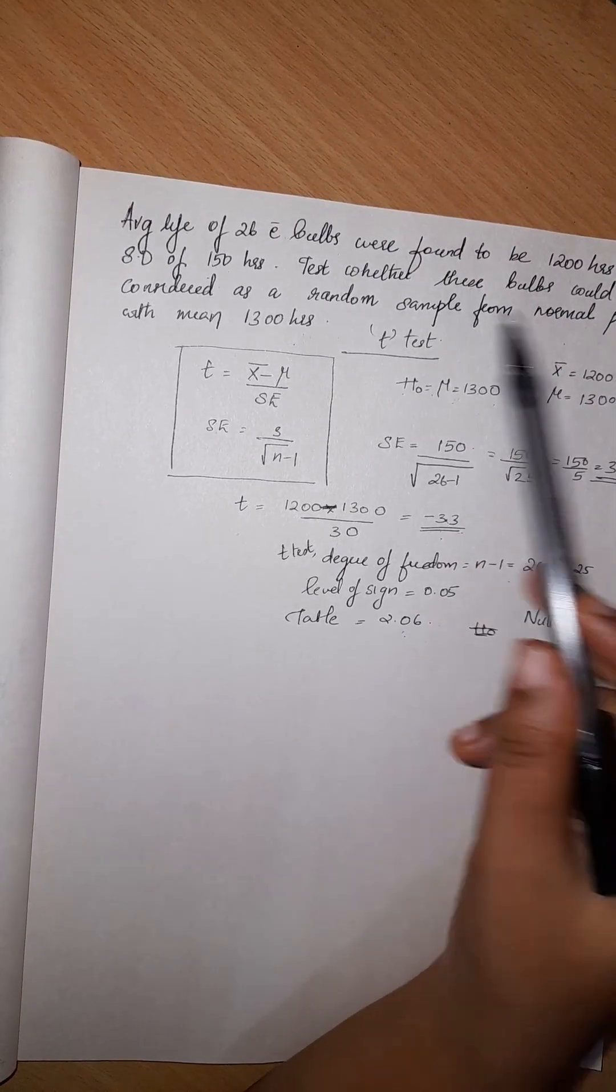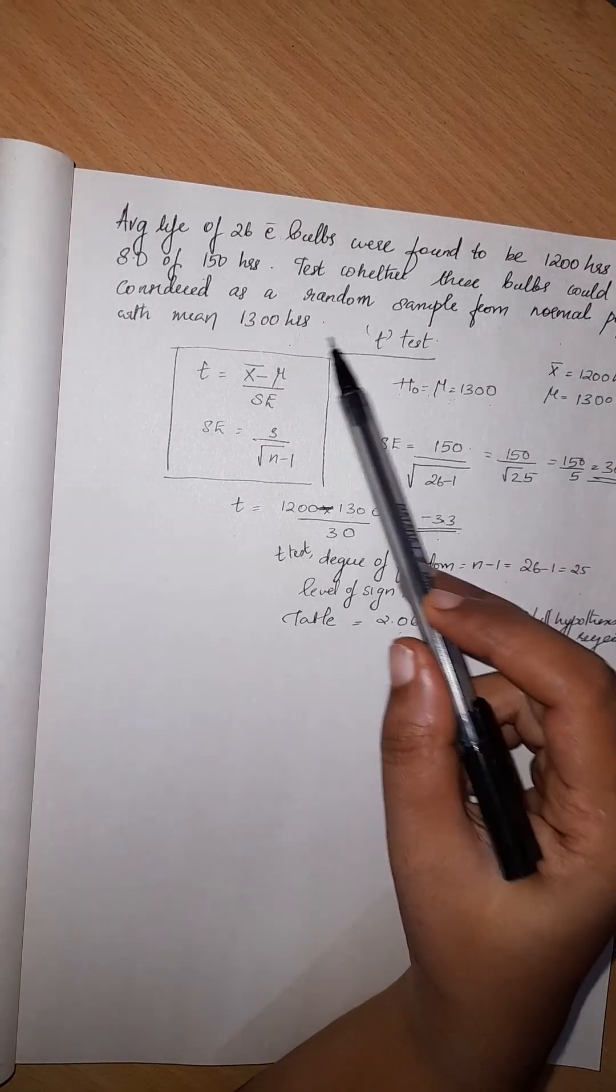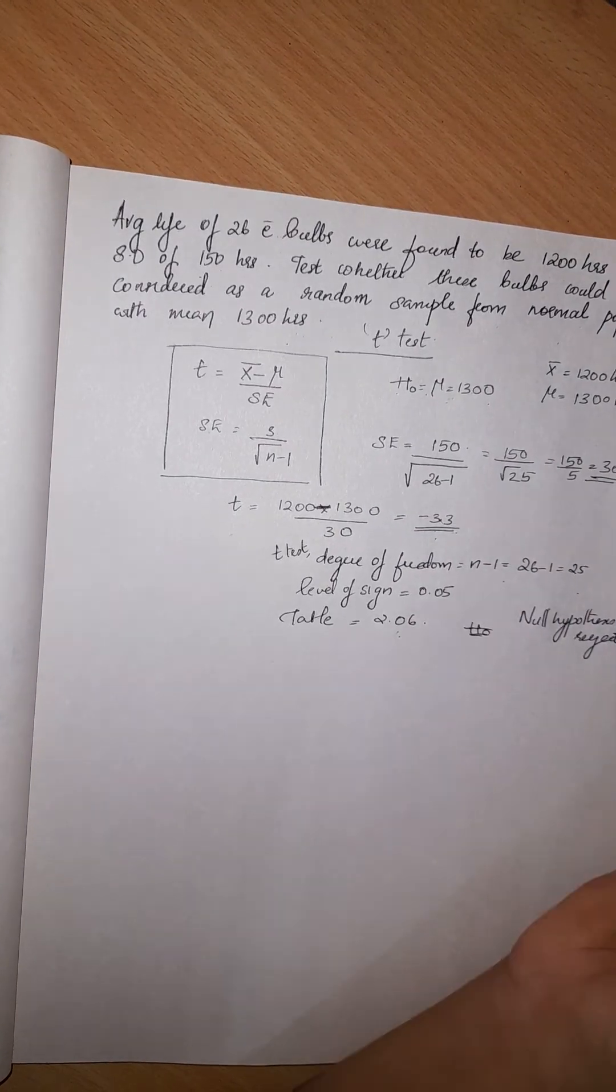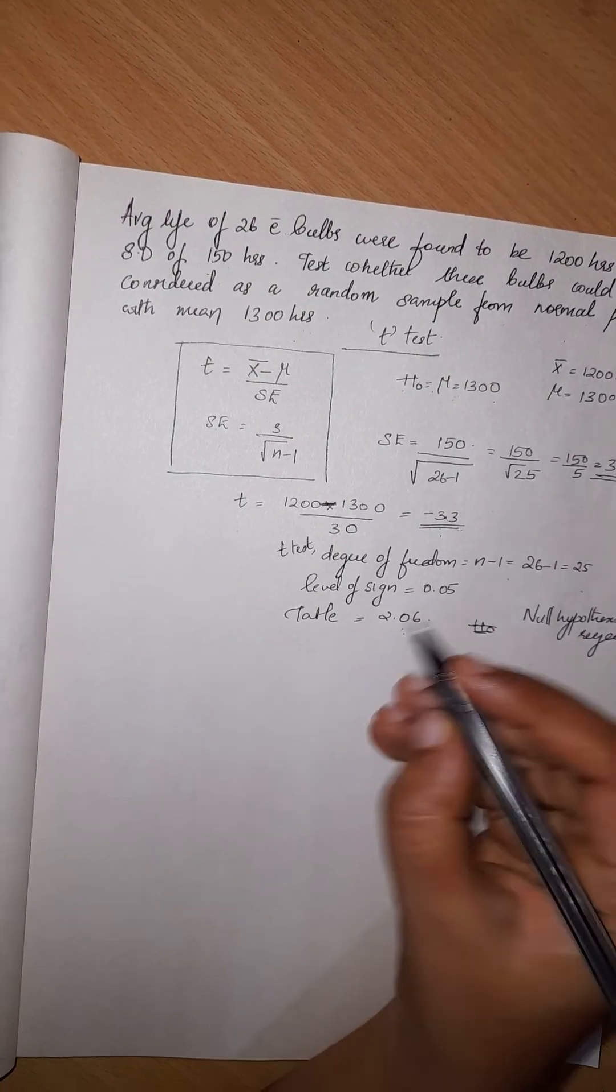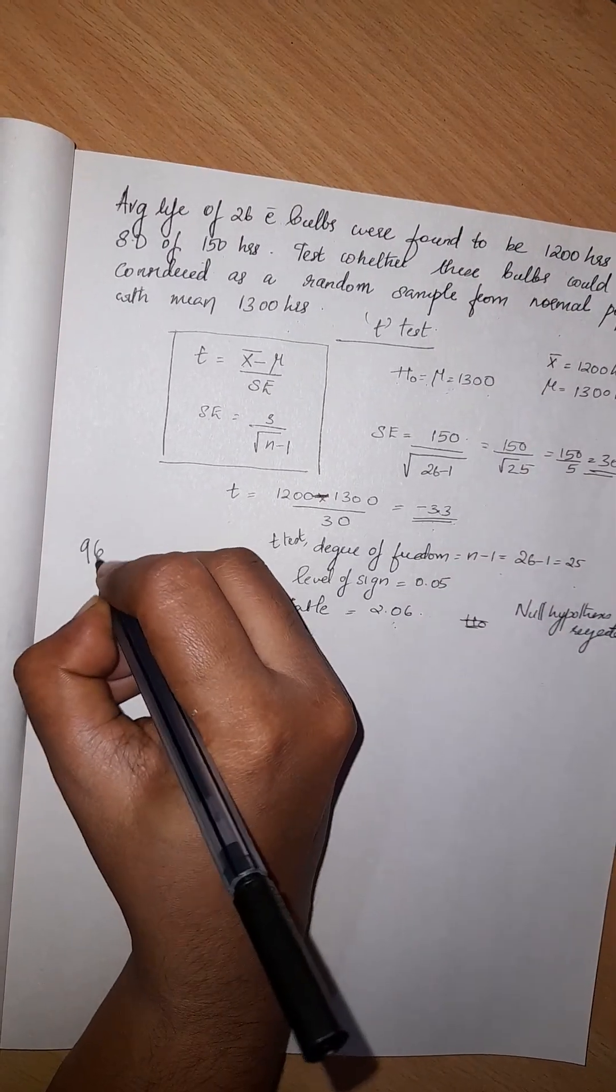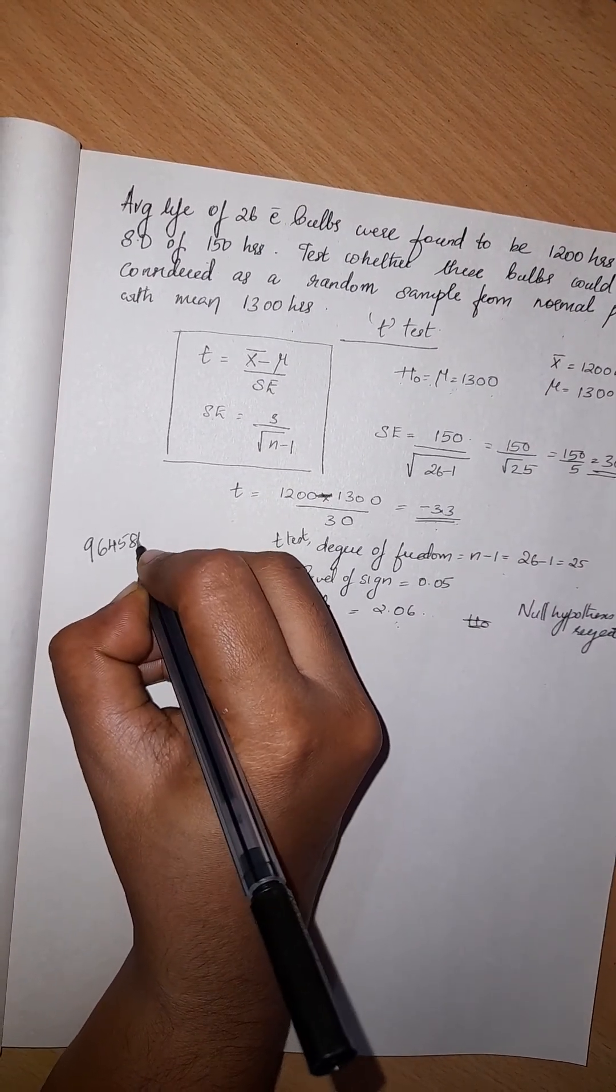So we will reject the null hypothesis. These bulbs cannot be taken as a random sample from the normal population with a mean of 1300 hours. Hope you have understood this. If you are having any doubts regarding any of the tests, you can contact on this number.